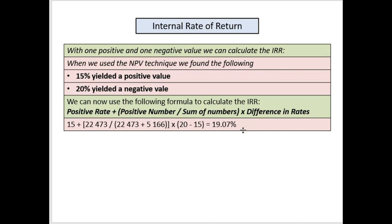When you do this in the assignment, simply copy that, put it in Word or Excel, replace the values, do the calculation — and that's the only time you need to do it. The ICB at some point decided that this is a little difficult, so we're not going to ask students to do too many of these sums — only in the assignment. So that is with regard to the internal rate of return.